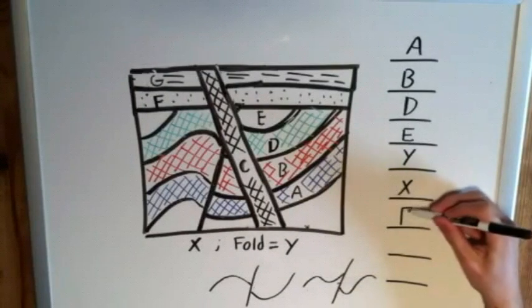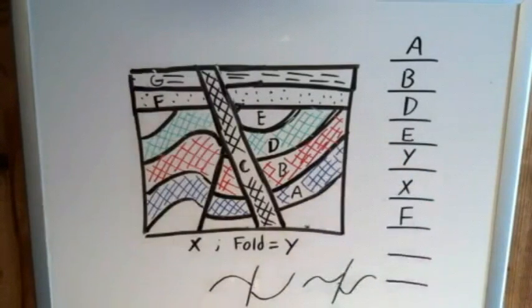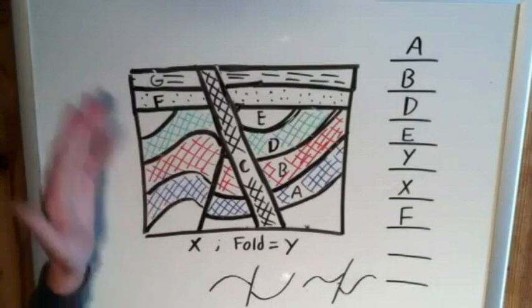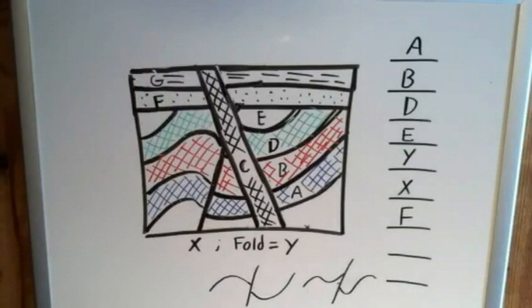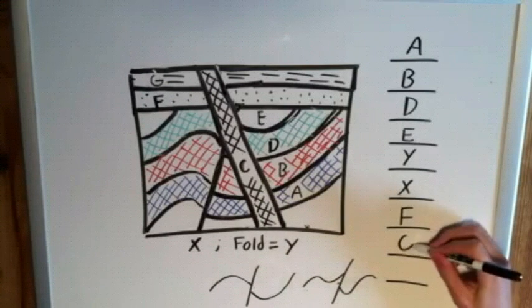Then we can move up once more to G, and G appears to be under the exact same circumstances as F. No faulting or folding has occurred between the two. They're both laying flat and G is still below C, so G therefore must have come directly after F.